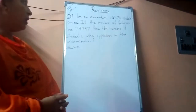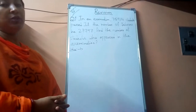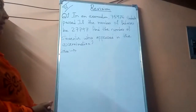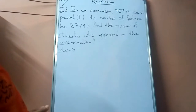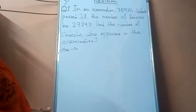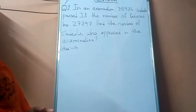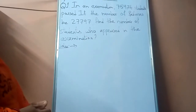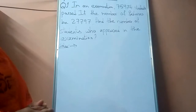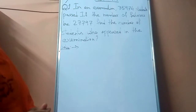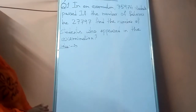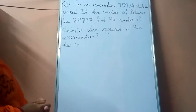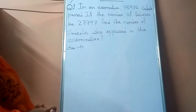On the whiteboard I have written one question and this question is from Composite Maths. The question is: in an examination, this many students passed. If the number of failures is this much, find the number of students who appeared in the examination. The total number of students passed and total number of students failed are given. You have to find the total students who appeared for the exam.